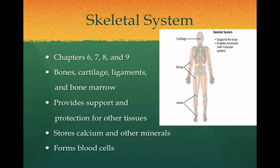The skeletal system includes major organs such as bones, cartilages, associated ligaments, and bone marrow. This system provides support and protection for other tissues, stores calcium and other minerals, and forms blood cells. We will study the skeletal system in Chapters 6, 7, 8, and 9.